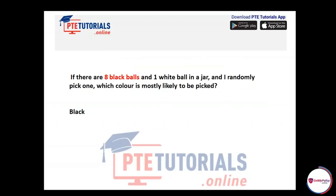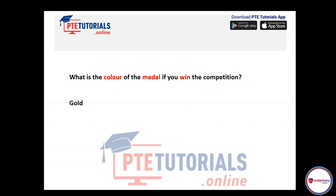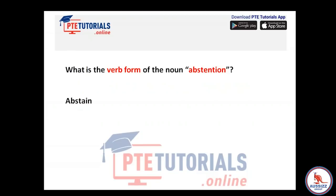Here are some repeated answer short question examples: 'If there are eight black balls and one white ball in a jar and I randomly pick one, which color is most likely to be picked?' — Answer: black. 'What is the color of the medal if you win the competition?' — Answer: gold. 'What is the verb form of the noun abstention?' — Answer: abstain. These questions have appeared in the PTE Tutorials February prediction file, so prepare yourself from there.